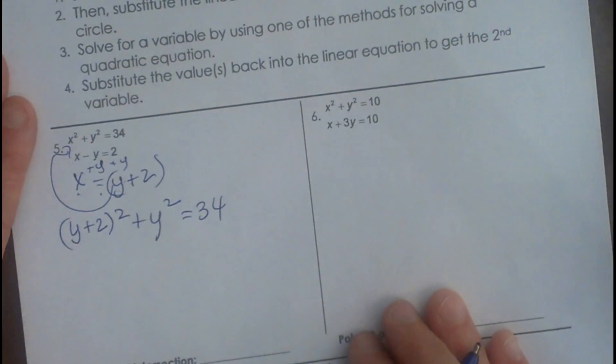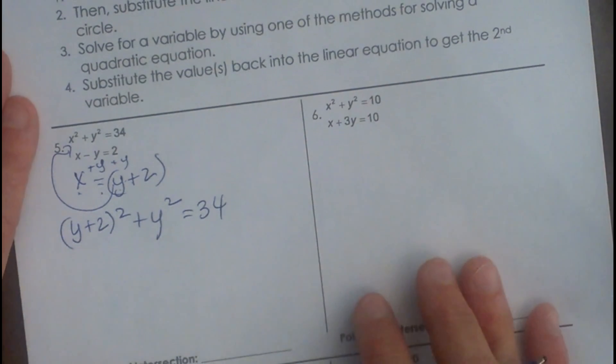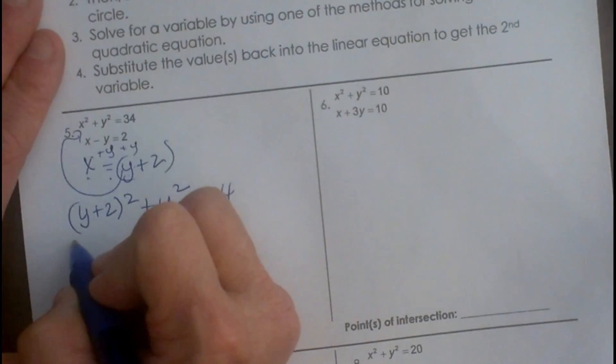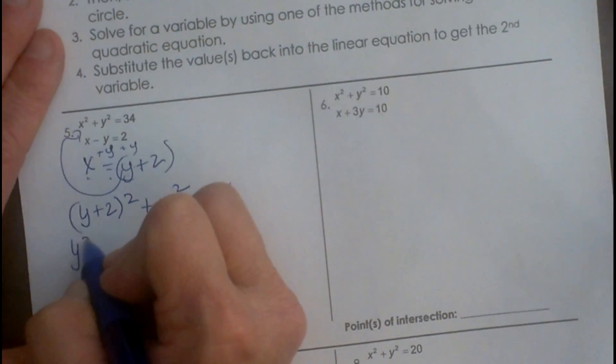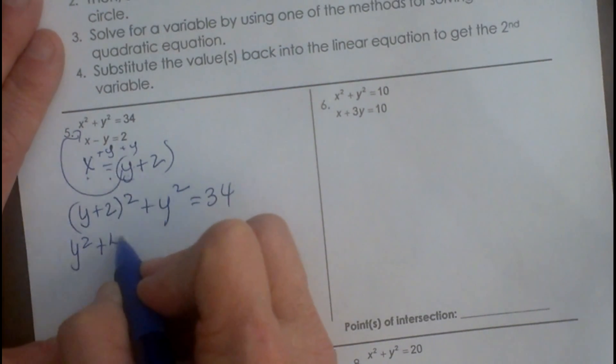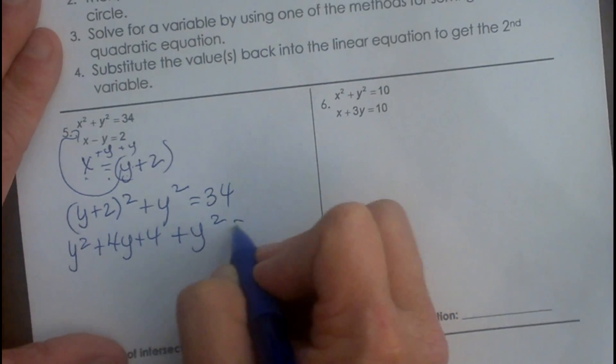We have to do a little work now. We need to get this as a quadratic so we can solve it. So let's foil this out. We got y plus 2 times y plus 2, which would be y squared plus 4y plus 4 plus y squared equals 34.